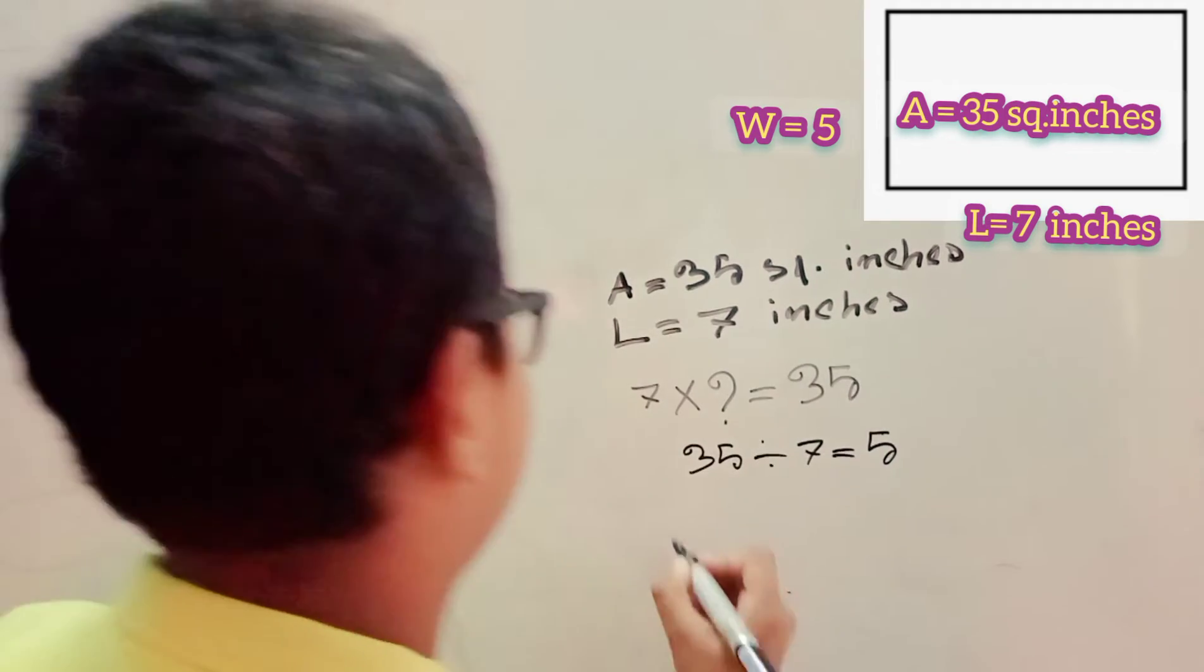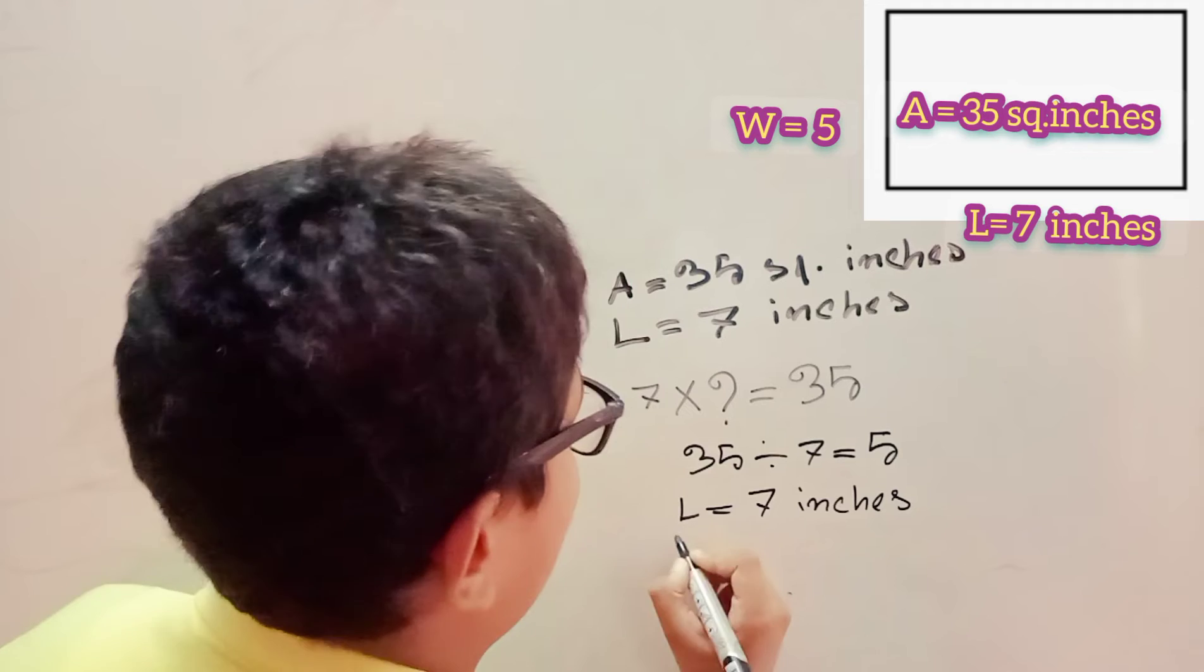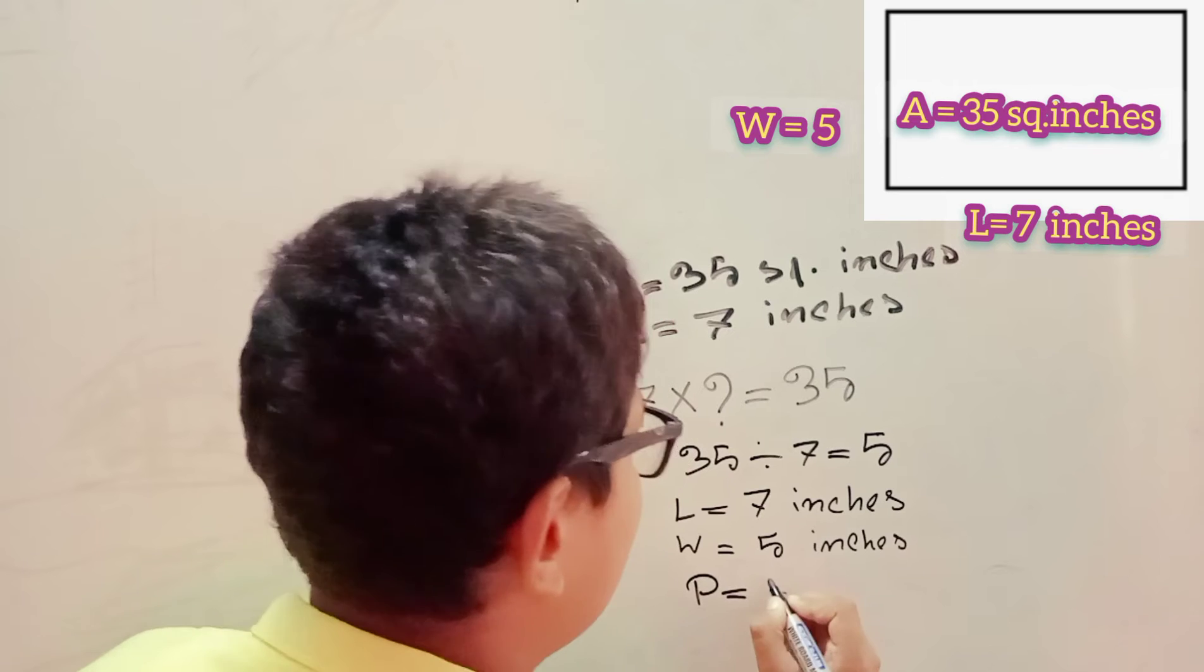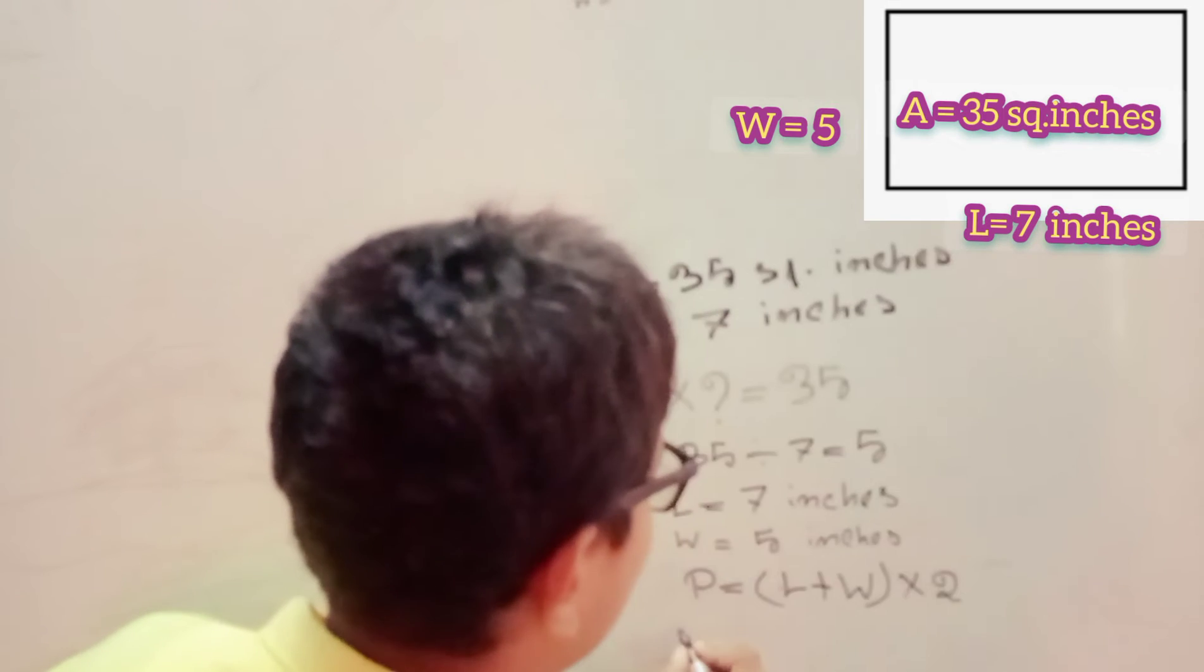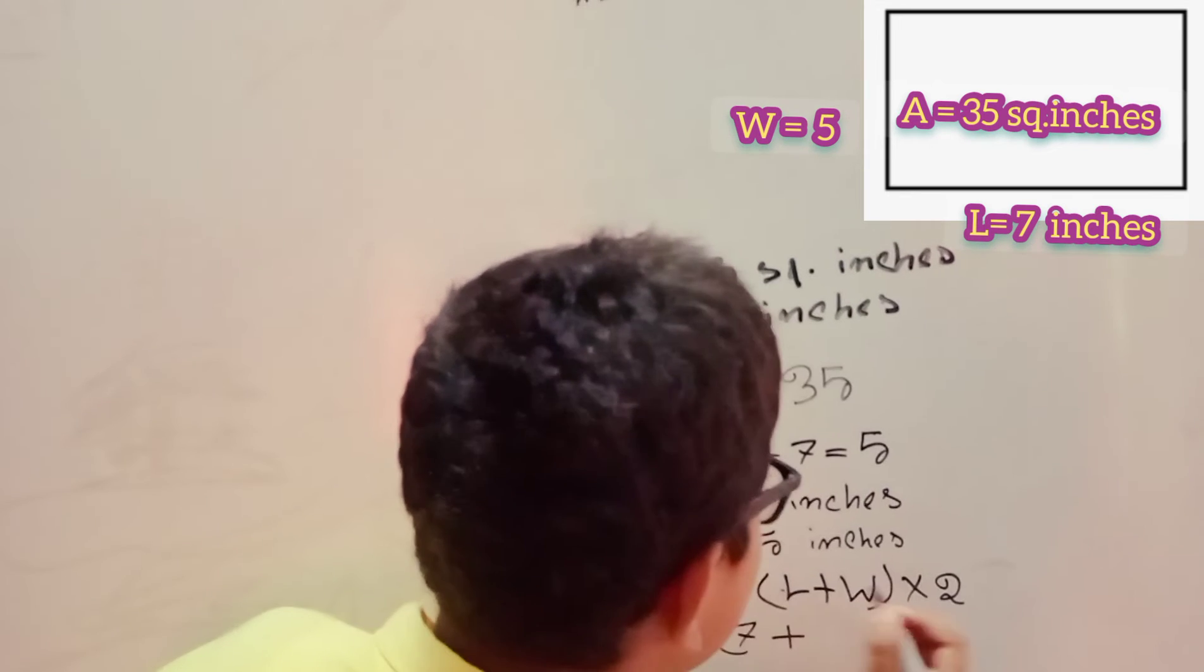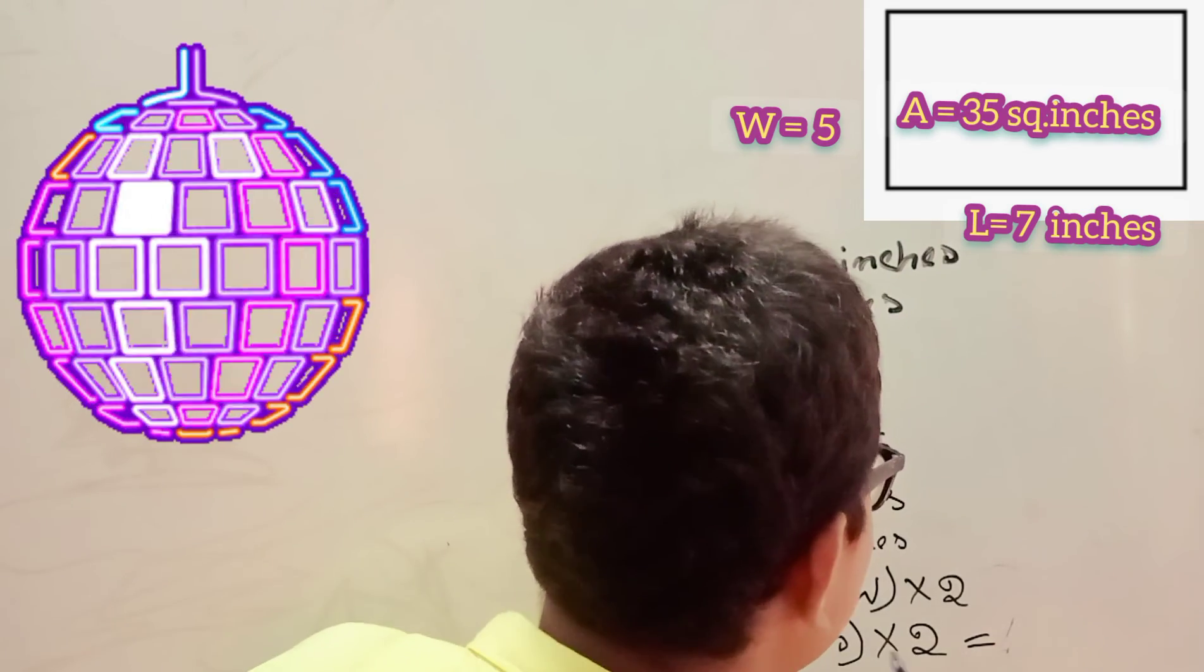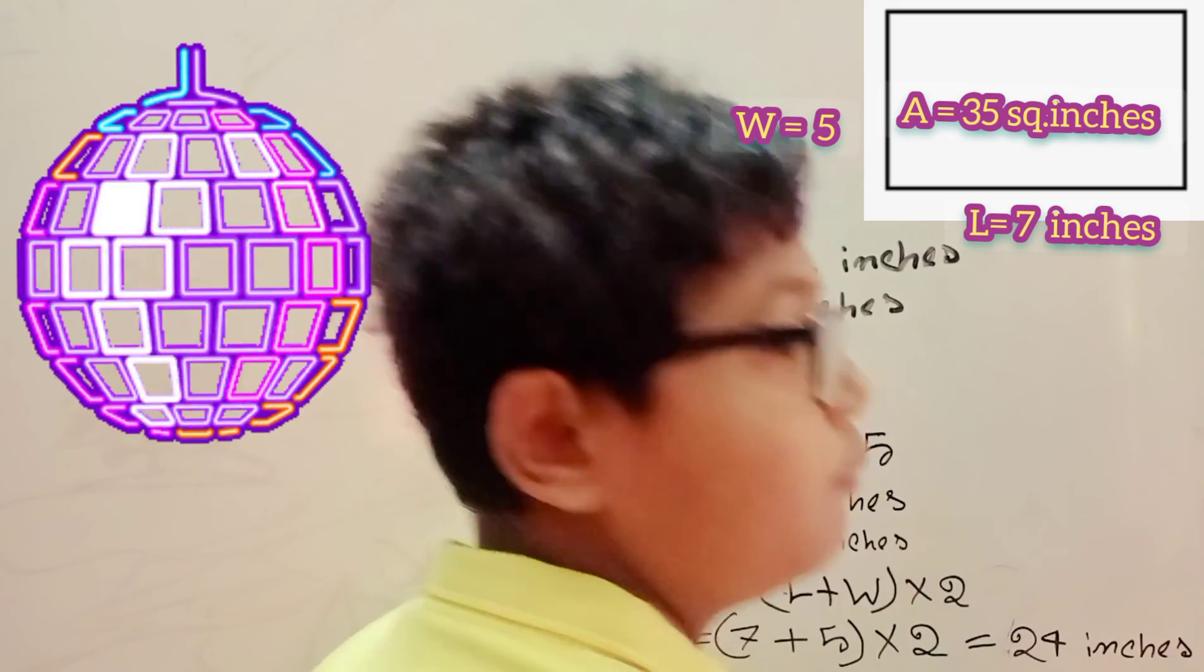So, 7 plus 5 equals 12, then 12 into 2 equals 24. The perimeter is 24 inches.